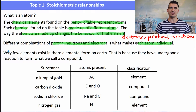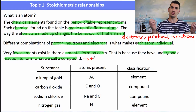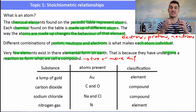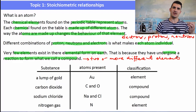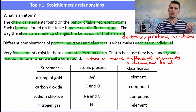Now very few elements exist in their elemental form on earth, because they've already undergone a reaction, so they're found as compounds that formed or joined with something else. A compound is two or more atoms that are combined with a chemical bond — they're physically bonded together. Now if we look at some of the different substances we might find and look at the atoms present, we can classify them as elements or compounds. So if we were to go out into the middle of Australia and dig up a lump of gold, that would have just gold atoms, so that's an element — elemental gold, the only thing present in that sample with only one type of atom.